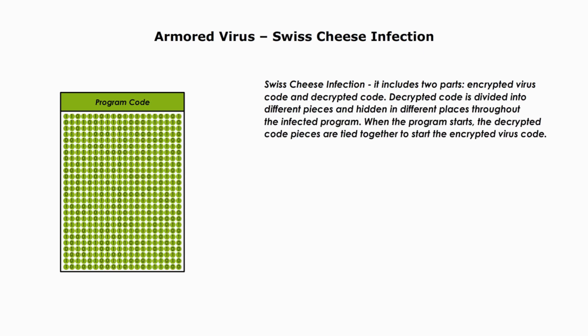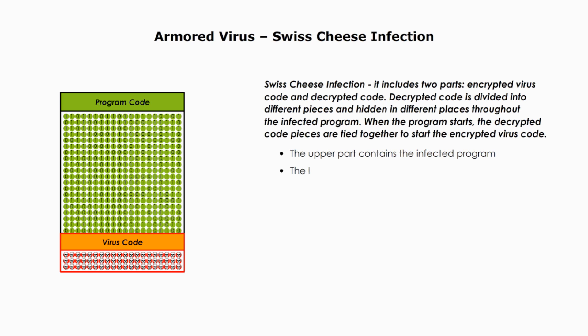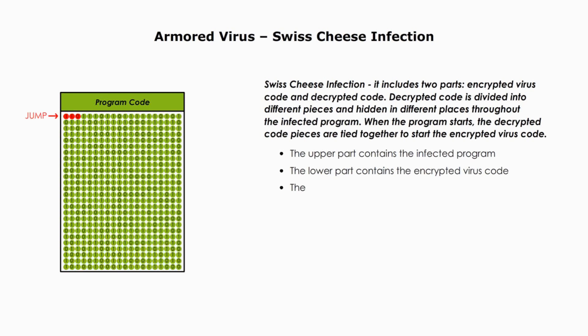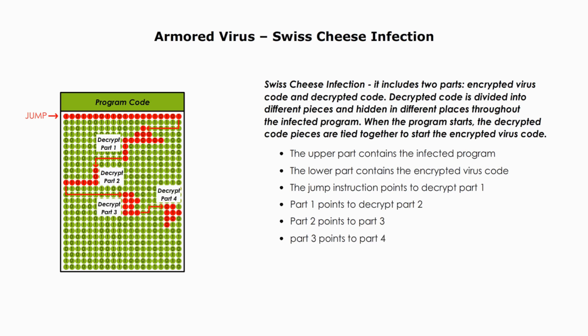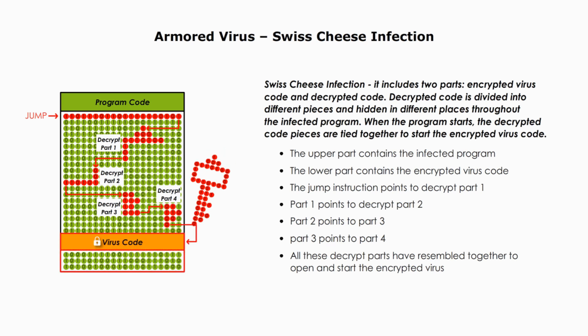The virus code includes two parts: encrypted virus code and decrypted code. The decrypted code is divided into different pieces and hidden in different places throughout the infected program. When the program starts, the decrypted code pieces are tied together to start the encrypted virus code. The upper part contains the infected program; the lower part contains the encrypted virus code. Once the program starts, it triggers the virus jump instruction. The jump instruction points to decrypted part 1, part 1 points to part 2, part 2 points to part 3, and part 3 points to part 4. All these decrypted parts are reassembled together to open and start the encrypted virus.